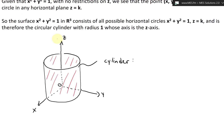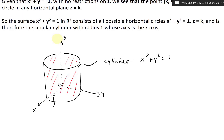So those are the cylinders. x squared plus y squared equals one, and the radius here is one — R equals one across from there to here. So these values are going to be one.